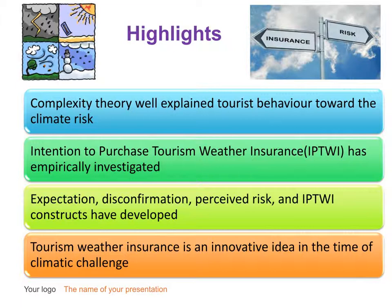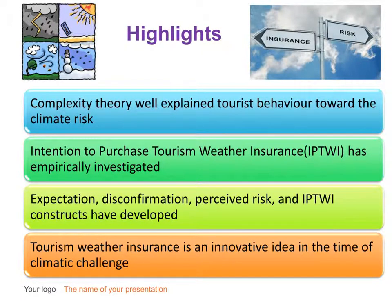In this slide, four highlights of this empirical research are listed. Complexity theory will explain tourist behavior toward the risk of destination climate. Intention to purchase tourism weather insurance has been empirically investigated and we found that the majority of respondents have a tendency to purchase such new services. Four original constructs — namely expectation, disconfirmation, perceived risk, and intention to purchase tourism weather insurance — have been developed and measured. We discussed that tourism weather insurance can function as an innovative idea in the time of climatic challenge for mitigating the adverse impacts of unfavorable weather on the tourism industry.